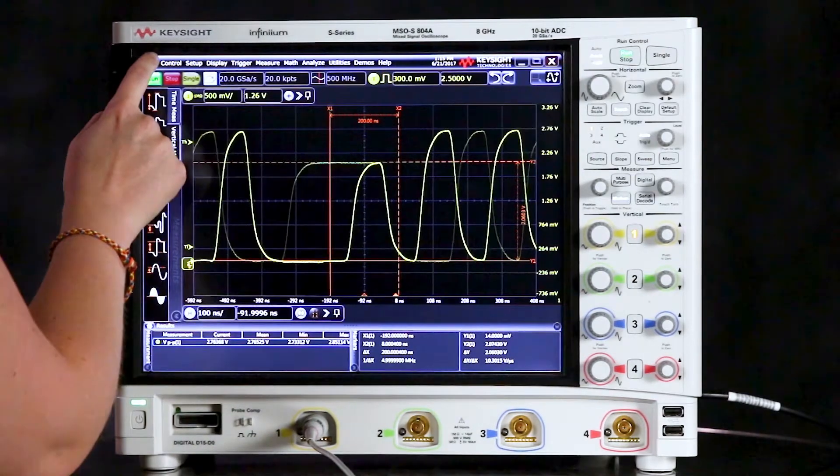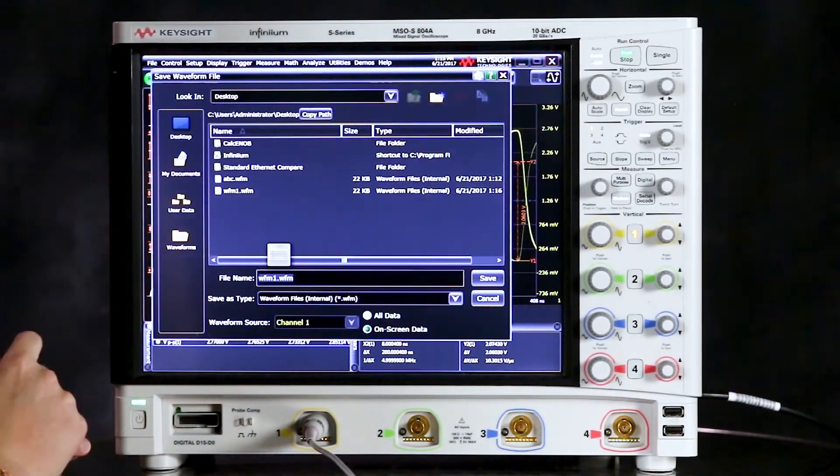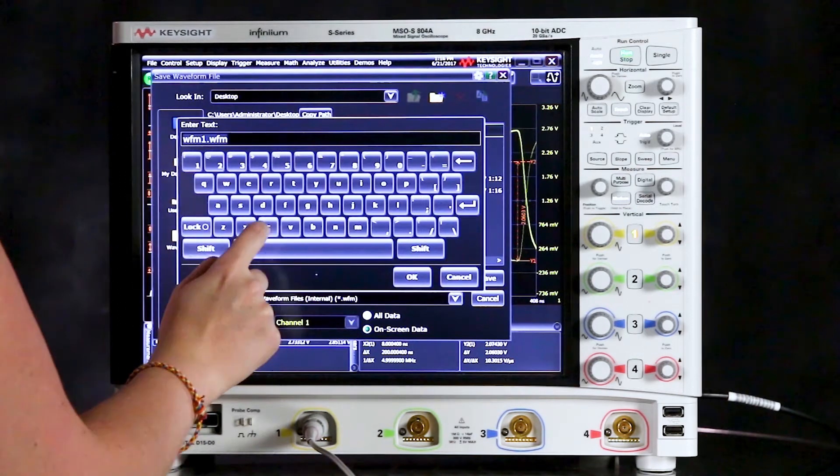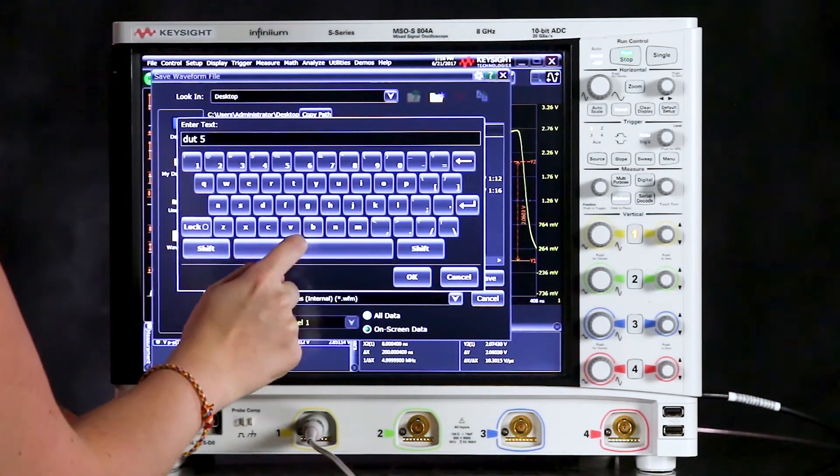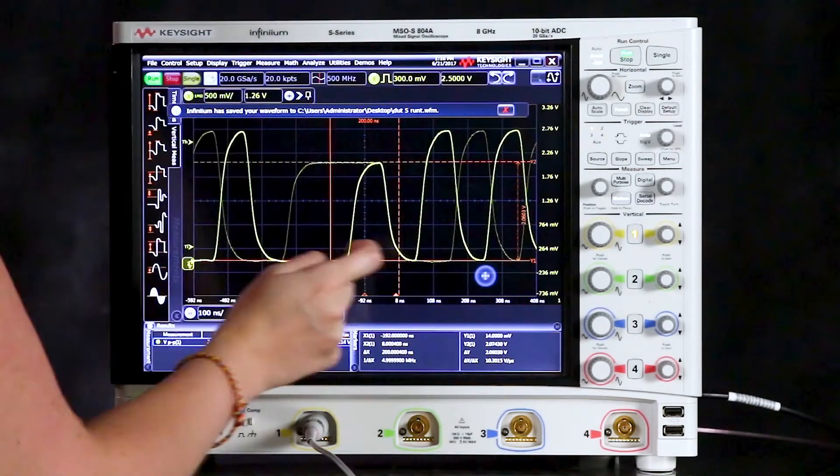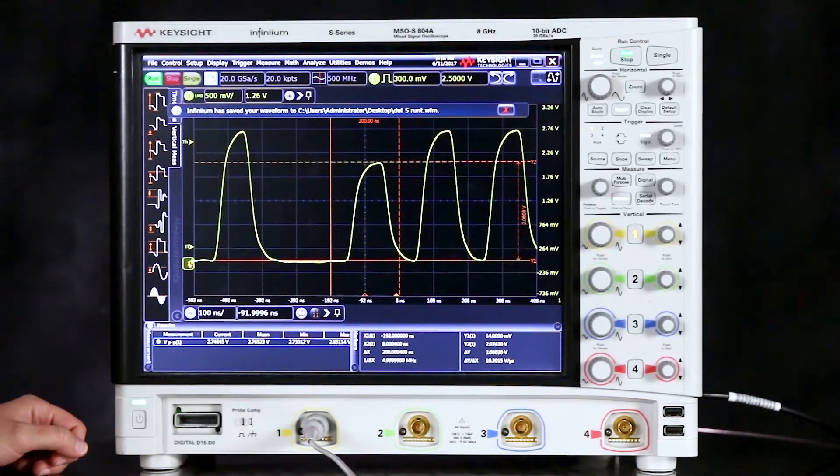I'll go into file, save, choose waveform, and I'll save this as .5 runt. And save it and now it's saved to my desktop on my oscilloscope.